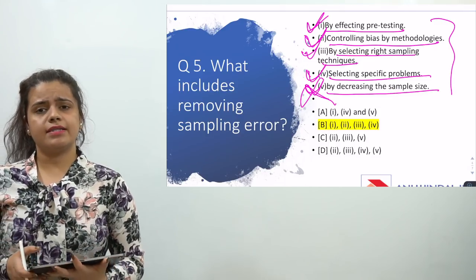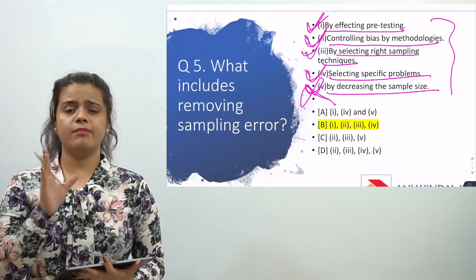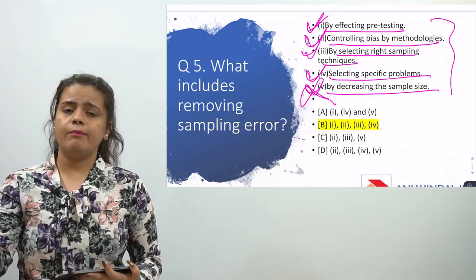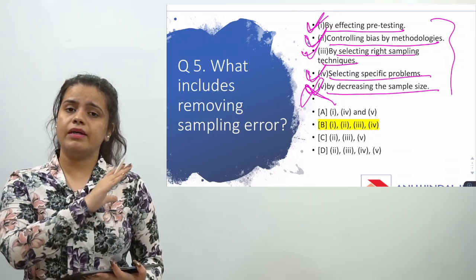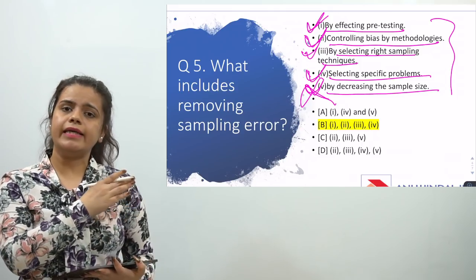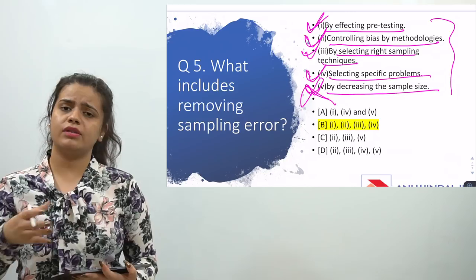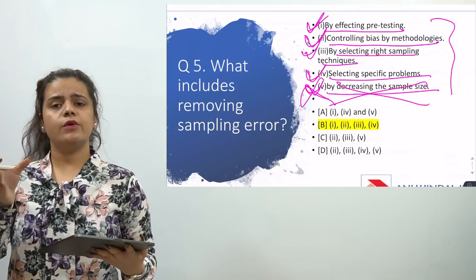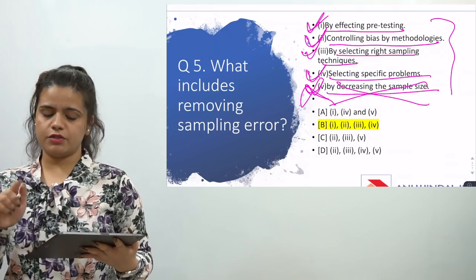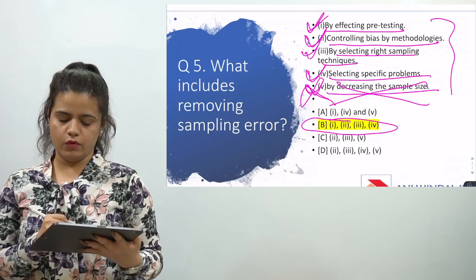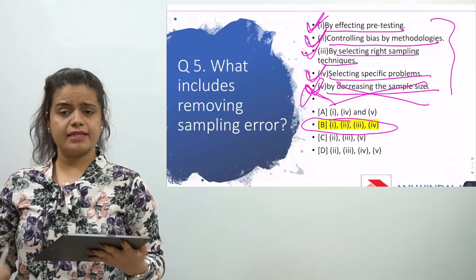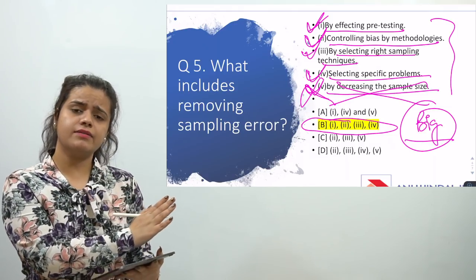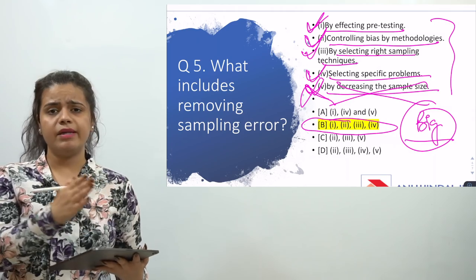Always remember one thing about sample size: as big as the sample size is, the sampling errors will be less. The bigger the sample size, the lesser the sampling errors. And as much as the sample size is small, the worse the result will be and there will be more errors in sampling. So the fifth option — decreasing the sample size — is wrong. The correct answers are the 1st, 2nd, 3rd, and 4th options. The conclusion is that sample size should always be bigger, not smaller.